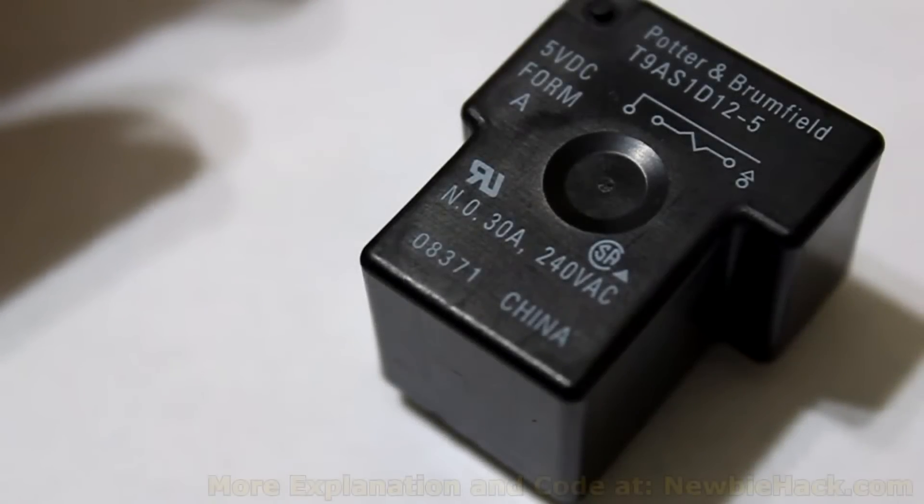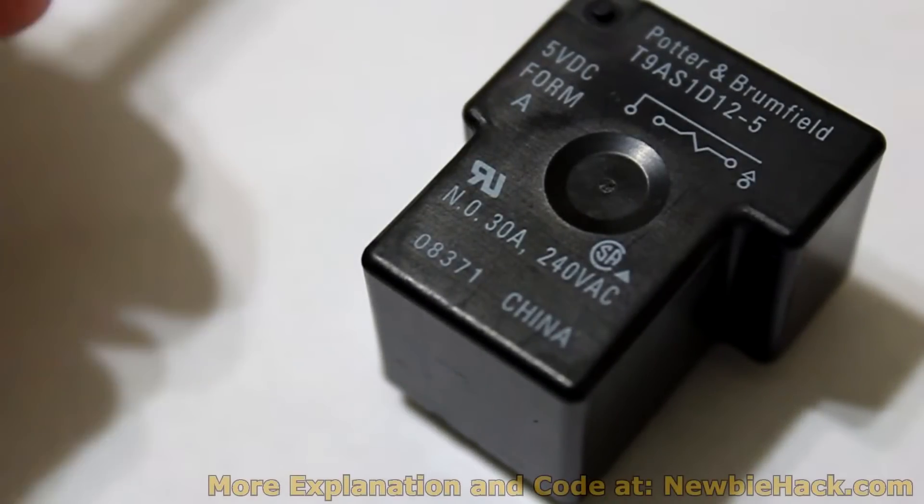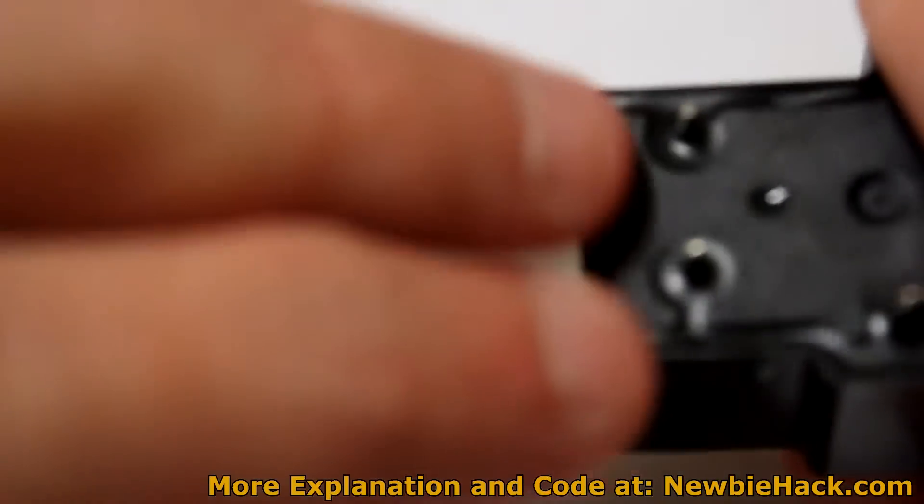Now we get to the final component we need to consider in the circuit, the relay. We learned a little bit about the relay in part 1. The relay is activated by applying a current to these two leads.